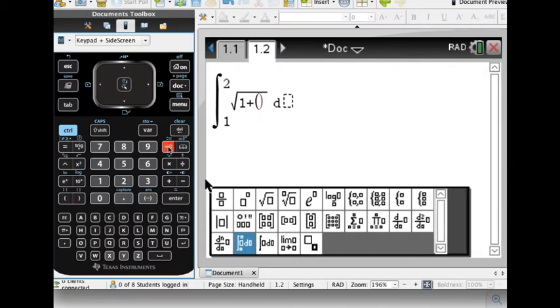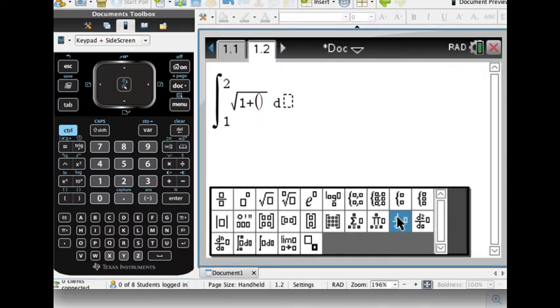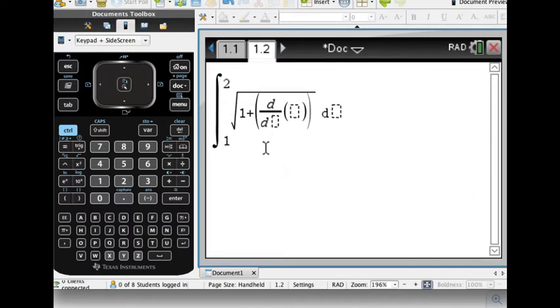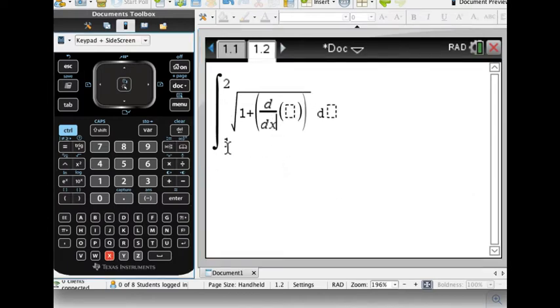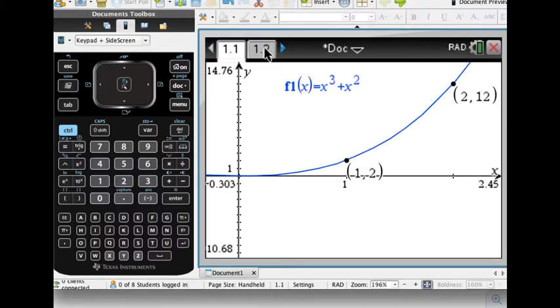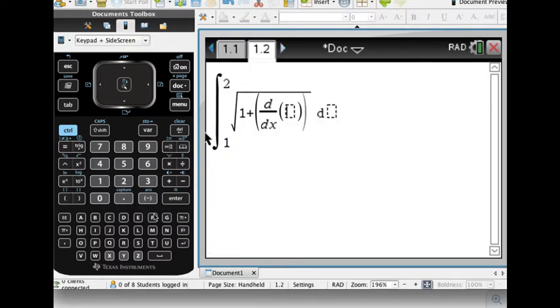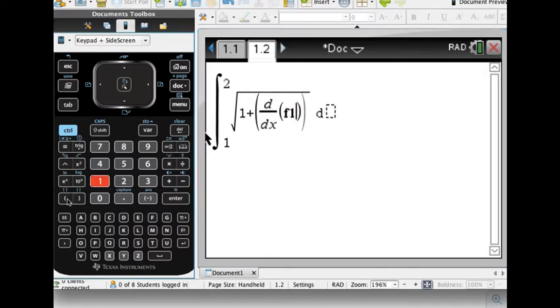Now I've got to take the derivative of it. So I'm going to go over here, get my derivative command, take the derivative with respect to x of my function, and let me make sure I've labeled him right. Yep, he's f1. So I called him f1. So I'm going to say f1 of x.